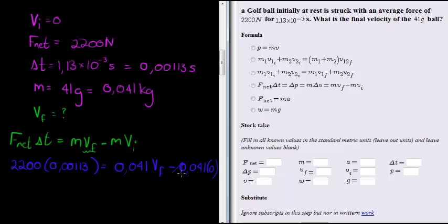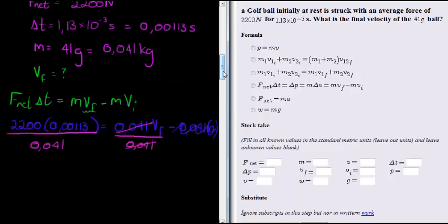Obviously this side will, or that term will simply vanish because we're multiplying with 0. And all I need to do to solve future velocity is divide with 0.041. That will cancel it on this side. And of course what I do on the one side I have to do on the other side. 0.041. And that brings me to what?